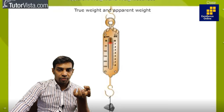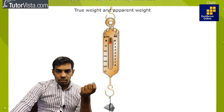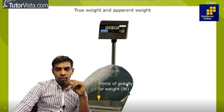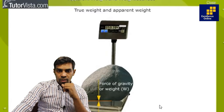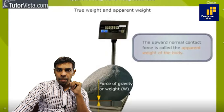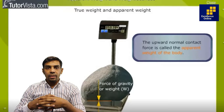The normal contact force or tension force varies. The actual weight acts downward and the tension is basically your apparent weight. Similarly, the normal contact force acts upward, as shown on a spring balance. When an object is on a surface, the force of gravity acts downward and the normal reaction force acts upward due to contraction of the surfaces. This upward normal contact force is called the apparent weight of the body, since it can change or vary with circumstances.